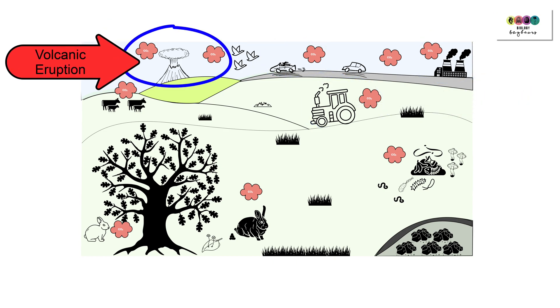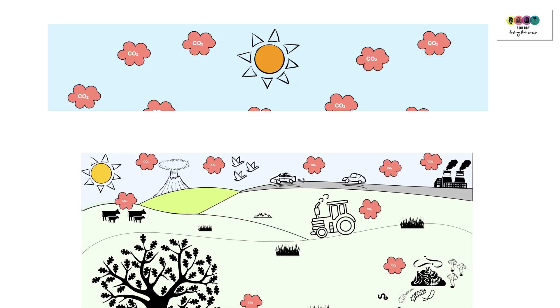When volcanoes erupt, this releases a lot of carbon dioxide back into the atmosphere, so carbon in this way is being returned as part of the cycle.